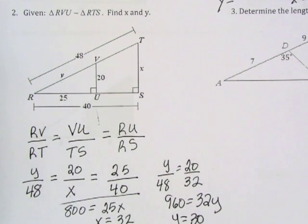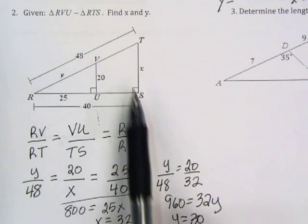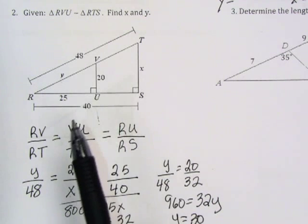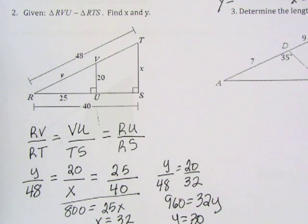So that is an example of where one triangle is sitting within another triangle. You are given your similarity statement and you are asked to find different pieces of both triangles.